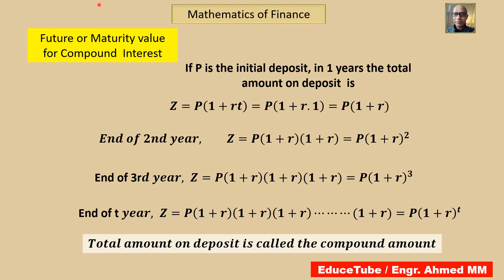To find the formula for compound interest, if P is the initial deposit, then in one year the total amount on deposit is Z equals P into 1 plus RT — nothing but the simple interest formula. If we put T equal to 1, it comes to P into 1 plus R. This is the total for the first year.